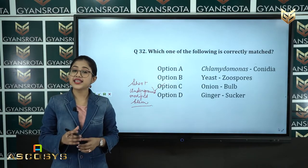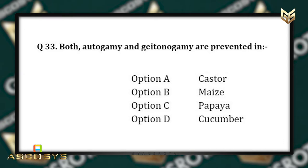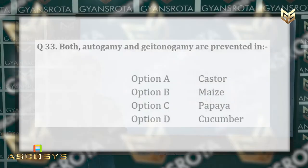Question 33: Both autogamy and geitonogamy are prevented in option A: Castor, option B: Maize, option C: Papaya, option D: Cucumber. This is from the chapter Sexual Reproduction in Flowering Plants.